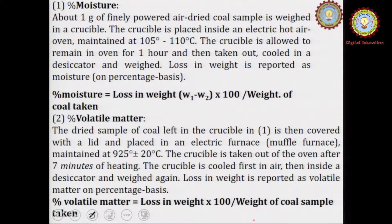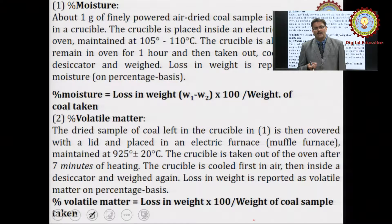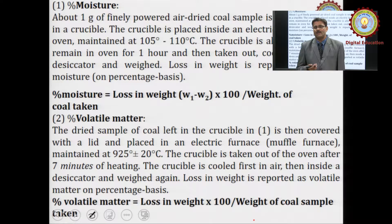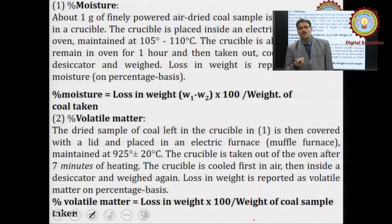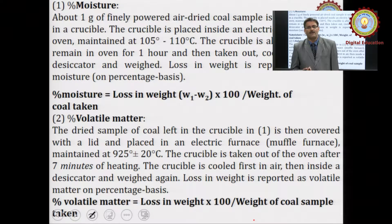After moisture, volatile matter is calculated. For volatile matter determination, the amount of coal obtained from the first stage after removing moisture content is then heated in a furnace at about 925 degrees Celsius for 7 minutes, so that all the volatile matters are released. The loss of weight is determined, and volatile matter is calculated using the formula: (loss in weight × 100) / weight of sample taken.